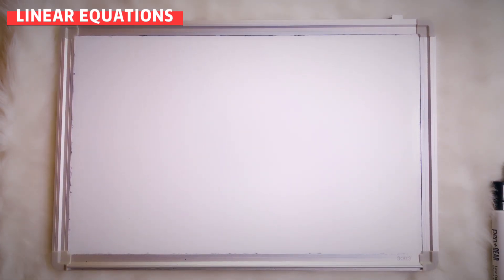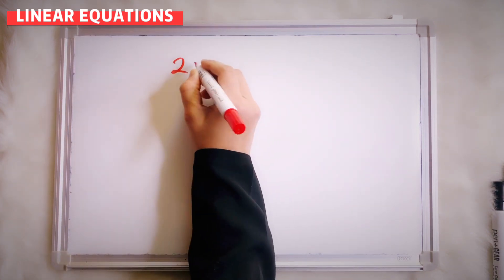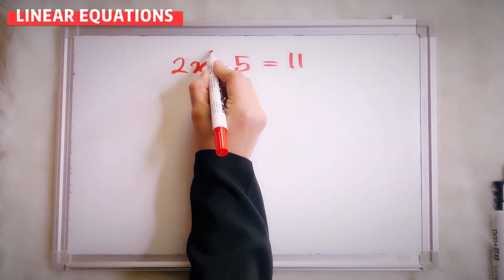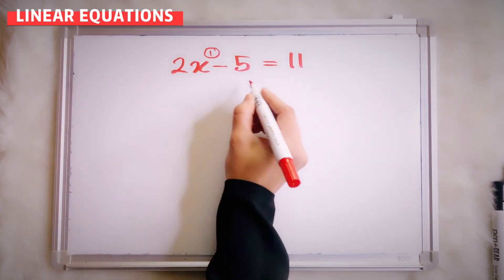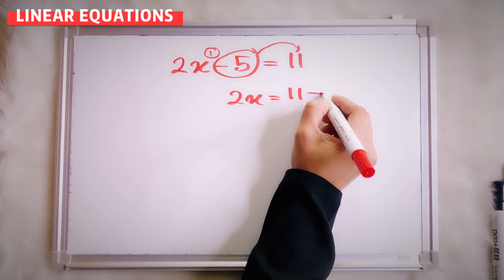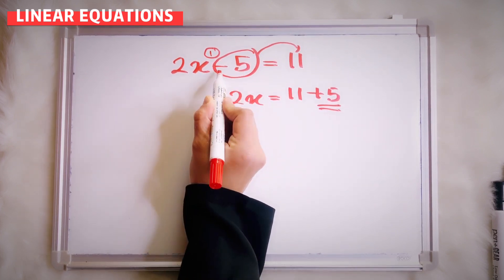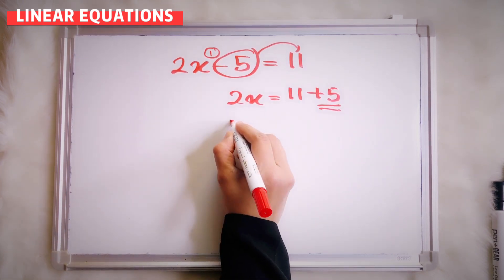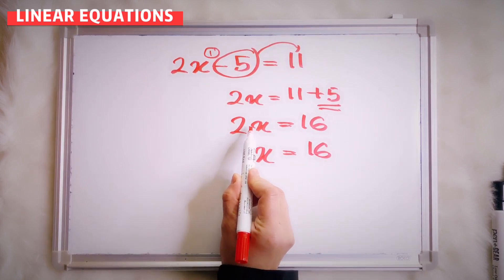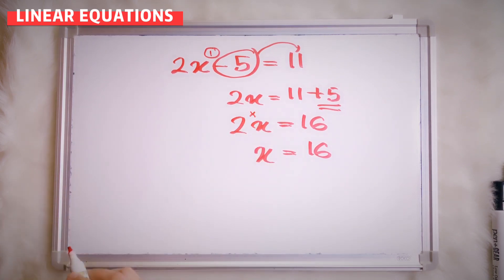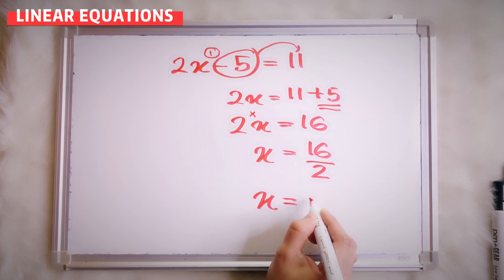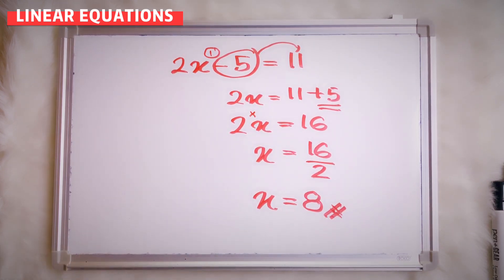We only focus on linear today. So let's say I give you 2x minus 5 equals to 11. This is linear — your power is equal to 1. So 2x equals to 11 plus 5. Why plus 5? Because here is minus 5, and the opposite of minus is plus. So 2x equals to 16. There is no operation between 2 and x, so that means this is multiply. The opposite of multiplication is divide, so divide by 2 and your x now equals to 8.